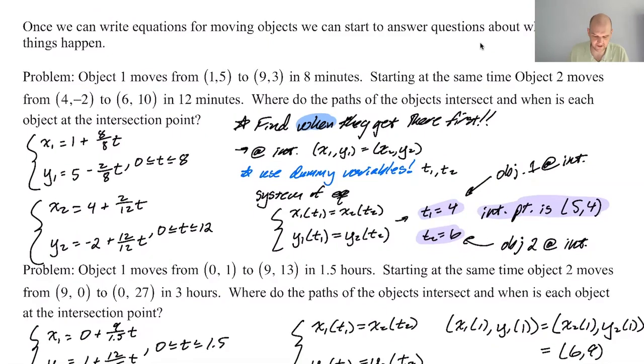The process is you figure out where the paths intersect, because they're almost never there at the same time. In one example, the first car went through at 4 seconds and the second at 6 seconds—they missed each other by 2 seconds. The intersection point was at (5, 4).